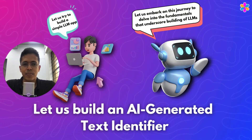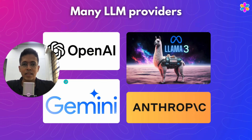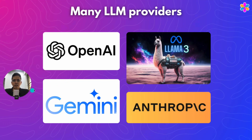Hi, in this video let's learn how we can build an AI-generated text identifier from scratch. There are so many large language model providers — you might have used OpenAI, ShareGPT, Anthropic Cloud, or even Llama 3 from Facebook Meta, or Google Gemini. When you read text-based articles on the internet these days, whether it's LinkedIn posts, blog articles, or even news, it sometimes makes you wonder whether the article was written by AI or not.